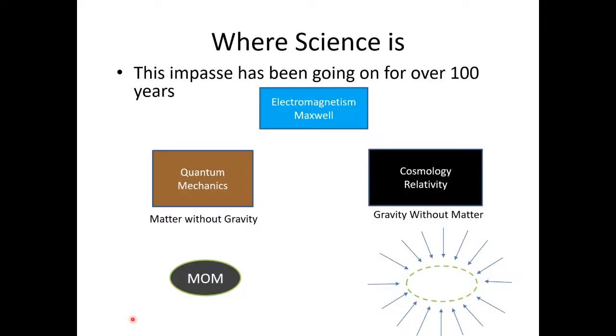So where is science right now? We've had an impasse that's been going on for over 100 years. Here's Maxwell equations, which came out about 1880-something. And then general relativity came out in 1916, and quantum mechanics somewhere in the 1920s it began.